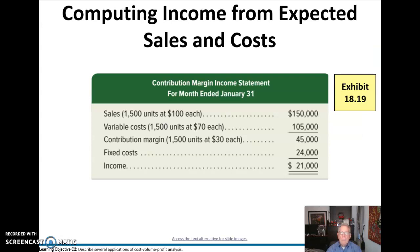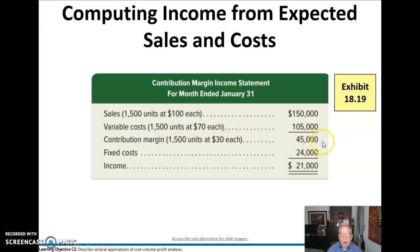How do we compute income from expected sales? In this example, we sold 1,500 units at $100 each, or $150,000 in sales. Variable cost is 1,500 units times $70, which equals $105,000. That gives us a contribution margin of 1,500 units times $30 contribution margin per unit, equaling $45,000. We subtract total fixed costs to arrive at income of $21,000.